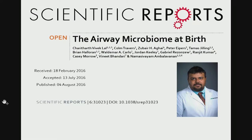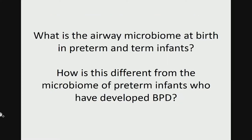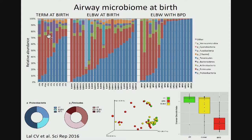One area we have become interested in recently is the microbiome. This study on the airway microbiome at birth, led by Dr. Vivek Lal, was published last year in Scientific Reports. As background, the lower airways are not sterile in adults — you and I have about 2,000 bacterial genomes per square centimeter of airway surface, with a characteristic microbial flora that differs between health and disease. Even breathing room air, the normal flora consists of anaerobes such as Bacteroidetes, and proteobacteria are strongly associated with airway disease such as COPD or asthma. Our questions: what is the airway microbiome at birth in preterm and term infants, and how is this different in preterm infants who develop BPD?